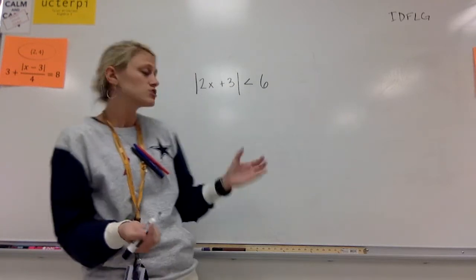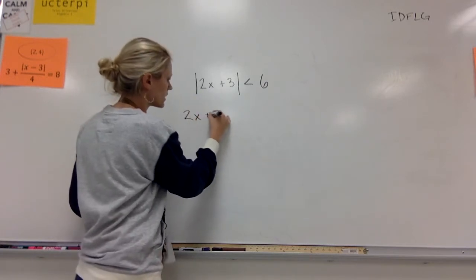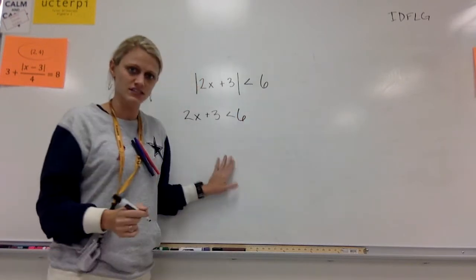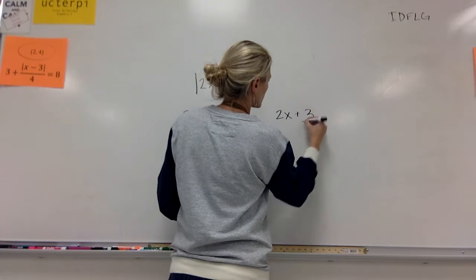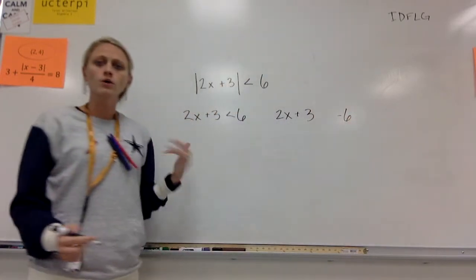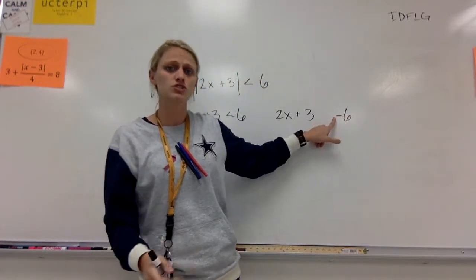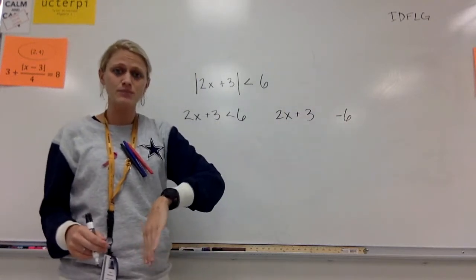So now what I need to do is take what's inside. So that's 2x plus 3, okay, it's less than a positive 6. 2x plus 3, we know it's going to have to relate to a negative 6. Now here's the catch, okay? So the positive 6 and negative 6, that's the same process as before.